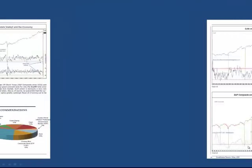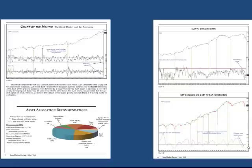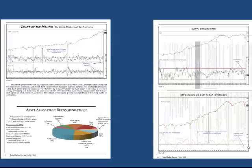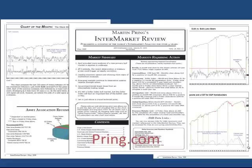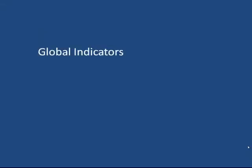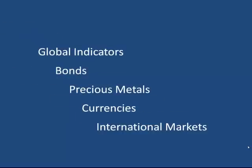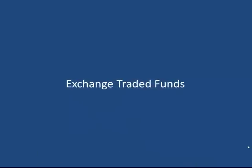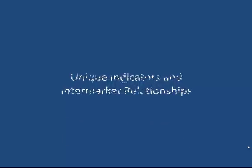If you've enjoyed this presentation, you might want to go to Pring.com and download a sample copy of our Intermarket Review, a monthly roundup of the world's principal financial markets with a special emphasis on the U.S. We also look at global indicators, bonds, precious metals, currencies, and international markets using ETFs to execute our strategies as much as possible. You'll find unique indicators and intermarket relationships you cannot find anywhere else. Thanks for watching, and good luck and good charting.